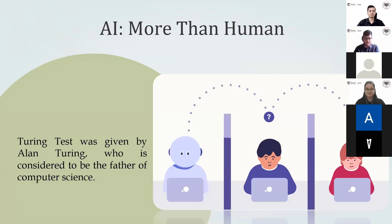Let us tell you more about the famous Turing test. The Turing test was given by Alan Turing, who is considered to be the father of computer science. In the test, a human interrogator interacts with two players A and B by exchanging written messages via chat. If the interrogator cannot determine which player is a computer and which is human, the computer is said to pass the test. The argument is that if a computer is indistinguishable from a human in a natural language conversation, it must have reached human-level intelligence.